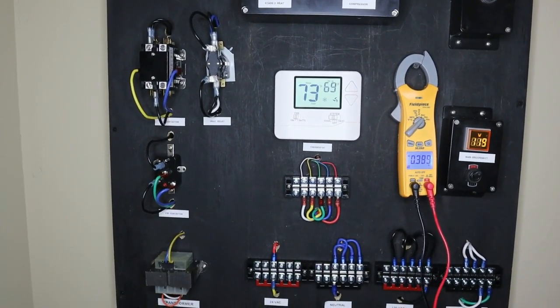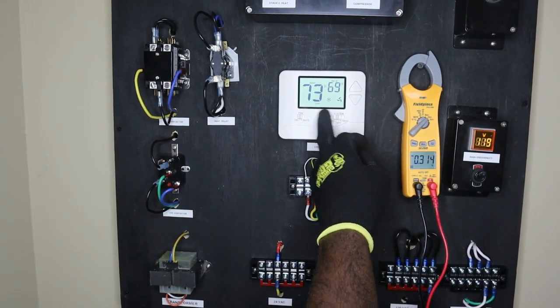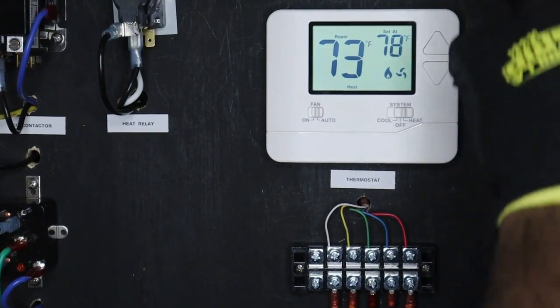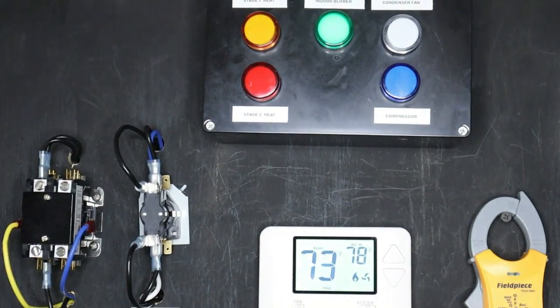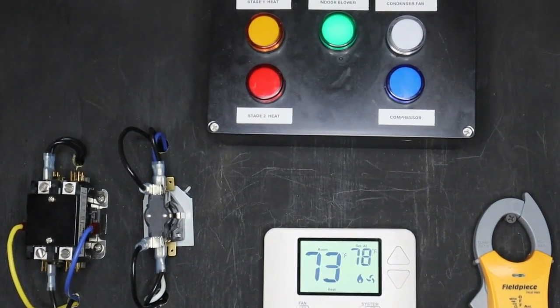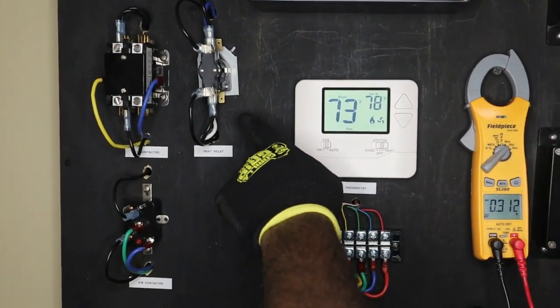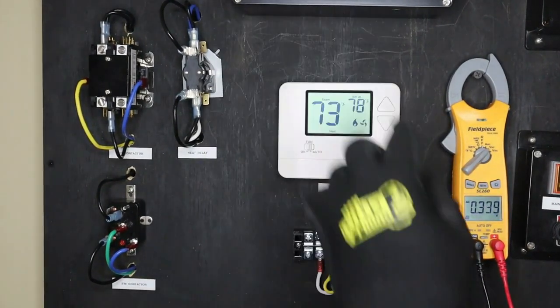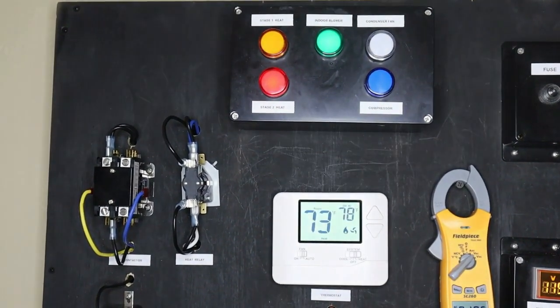For the last test let's test how our heat relay works. Now let's say we're calling, this is on auto, we're calling for heat. Now as you can see the moment we call for heat our compressor and our condenser fan shuts off. Now this heat relay has an on-delay timer. So as you see it took a few seconds to turn on. As you can see we have our stage 2 and stage 1 heat LEDs now lit.